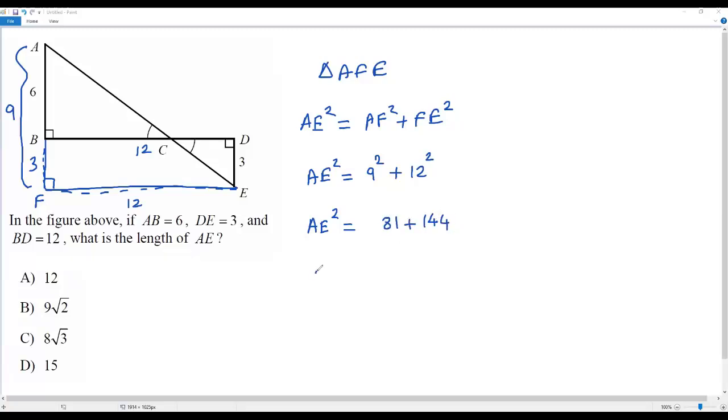My aim is to get the length of AE, but here we have AE squared. To remove the square, I take the square root on both sides. For the number 225, we usually consider positive or negative, but AE represents the length of a side which cannot be negative, so we consider only the positive value. The square root of 225 is 15. So the length of AE is 15, and the correct answer choice is option D.